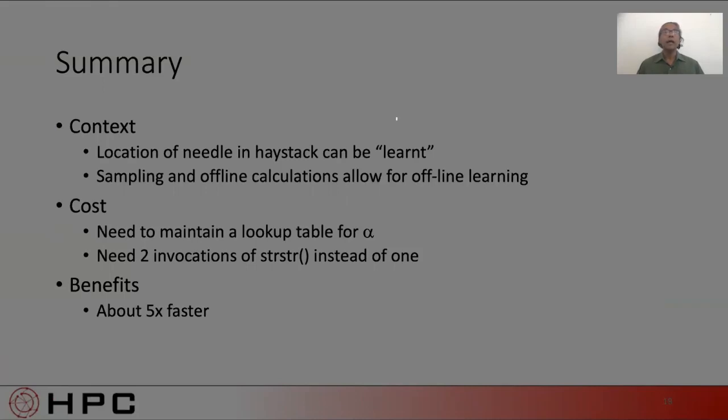Summarizing this example, the idea was to look for context, we found it in the fact that the location of the needle in the haystack could be learned. Note that we use learning in a very weak sense over here. The cost of the implementation involved periodic offline calculations of c and beta and for every packet length, mu and sigma. The benefits were unexpectedly good. We got an average speed up of 5x.